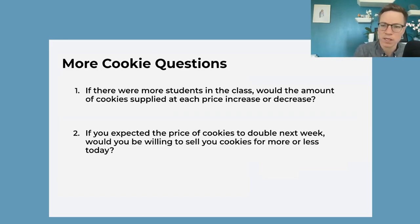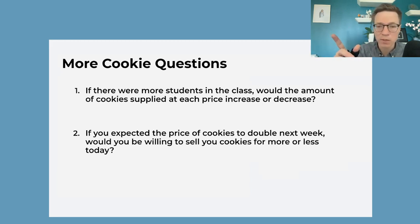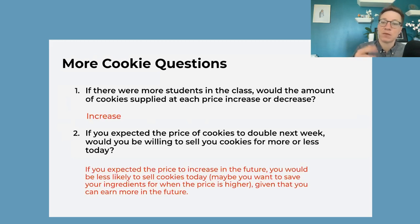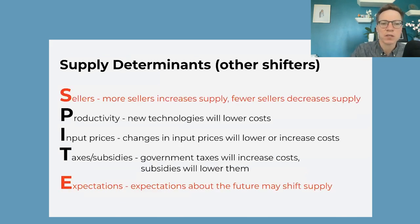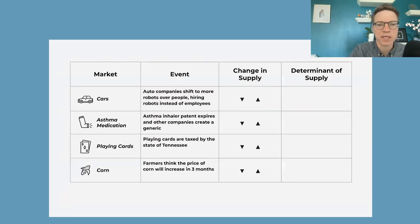Now we have other supply shifters. If there are more students in the class, would the amount of cookies supplied at any given price go up or down? If the expected price of cookies doubles next week, how is that going to affect your willingness to supply today? If there are more people in the class, the supply will increase at any given price. If you expect cookies to be more expensive in the future, you're likely going to produce less today — or increase your lowest price today because you want to hold some ingredients back for when that price is higher. So we had to add these two other shifters: the number of sellers in the market, and expectations.